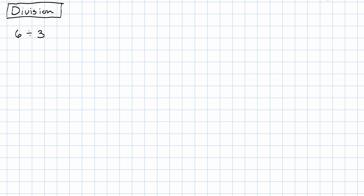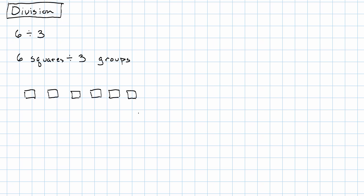Let's say we want to divide 6 by 3. There are two ways we can understand this. We can think: I have, for example, 6 squares, and I want to divide them into 3 groups. So here are my 6 squares, and I'm just going to count them off in order to divide them into groups.